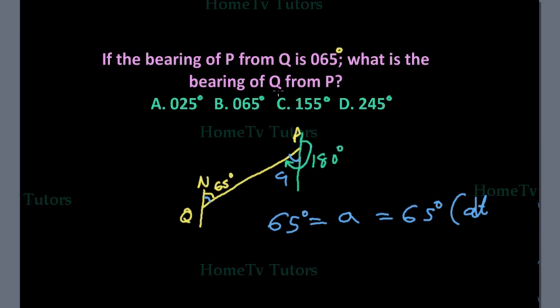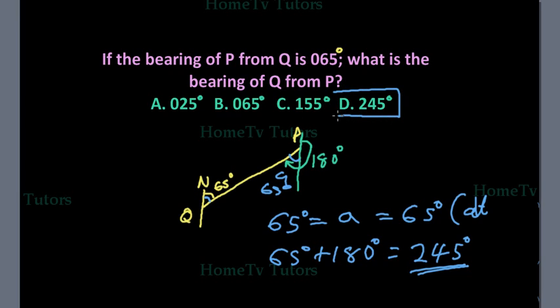So the bearing of Q from P is 65 degrees plus 180 degrees, which gives us 245 degrees. So, the answer option D is the right answer.